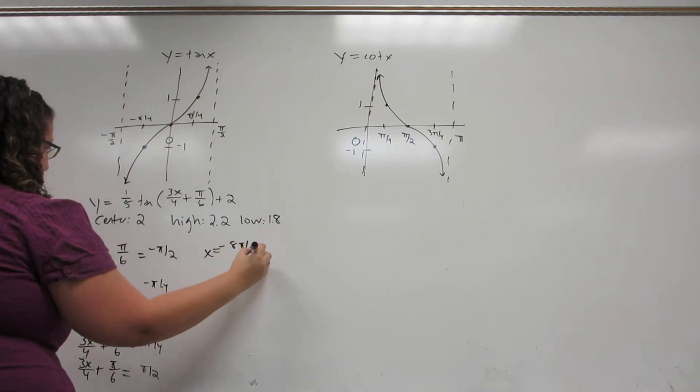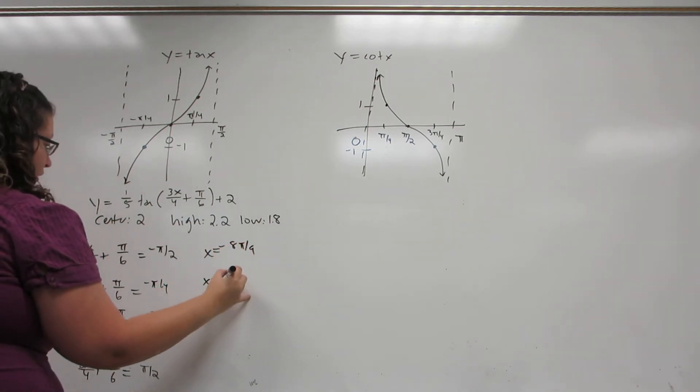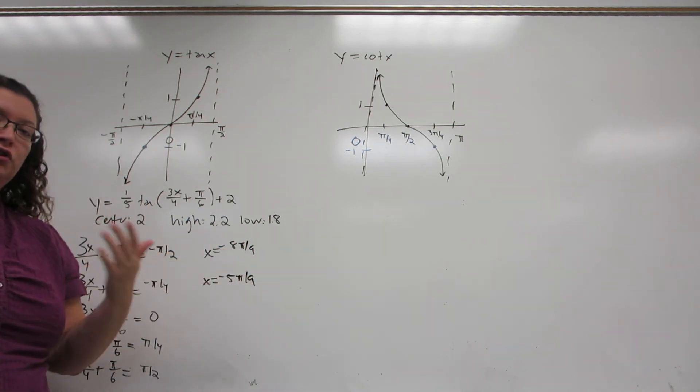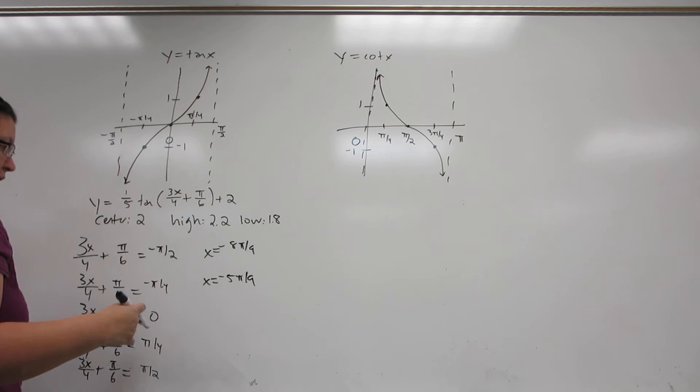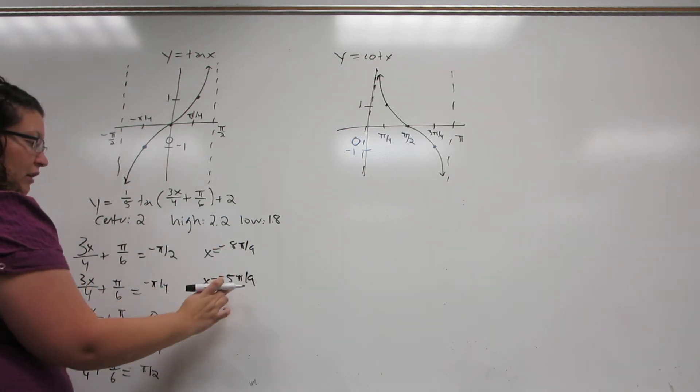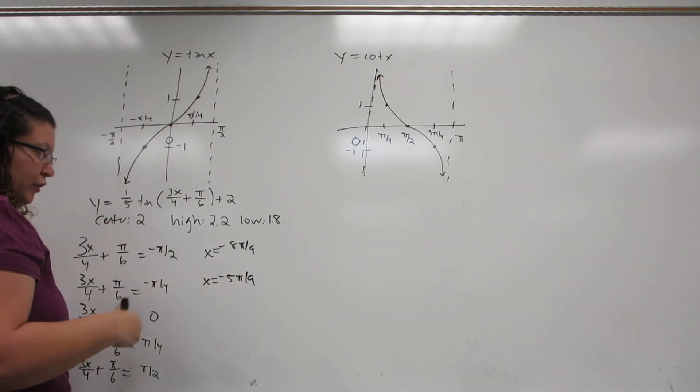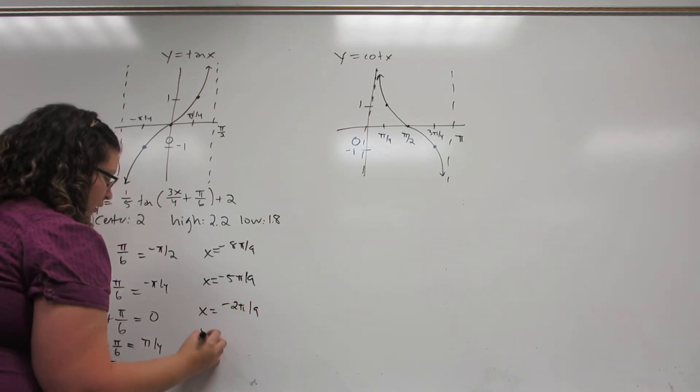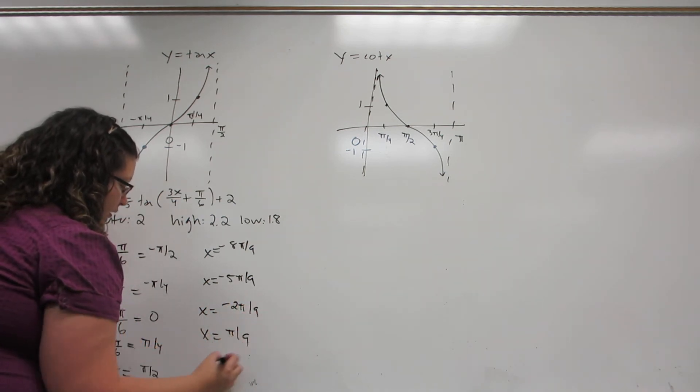You get negative eight pi over nine, negative five pi over nine. And once again, once we have the first two, we can use a repeating pattern to find the rest. To get from negative eight over nine to negative five over nine, I added three over nine. So I'm just going to keep on adding three over nine each time.